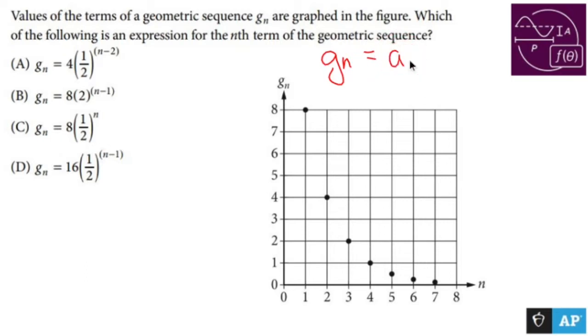But it's going to equal the first term times the common ratio, which is what you multiply to get to the next term every single time, to the nth term minus 1 power. So what do we know? We know the first term a sub 1 is going to equal 8.